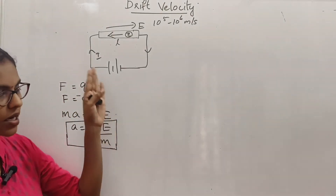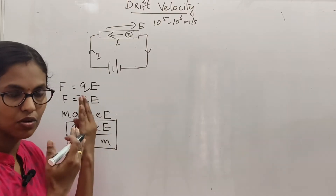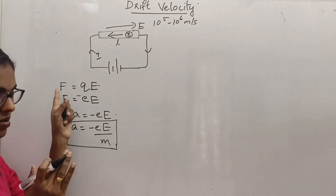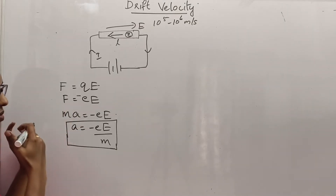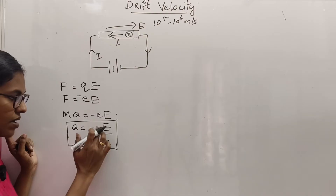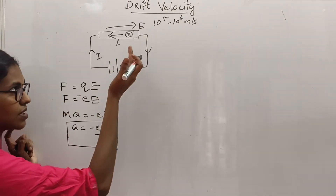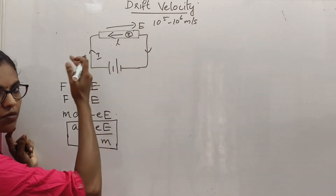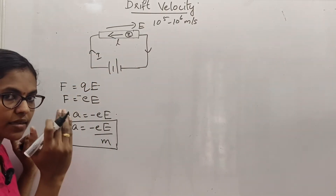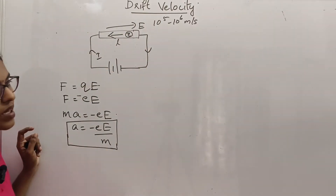When the electric field is applied and we have a drift, this is in the opposite direction of the electric field. That force will move the electrons. This acceleration is given by minus E divided by M. The force will accelerate electrons towards the positive end of the conductor. The velocity acquired is known as the drift velocity.